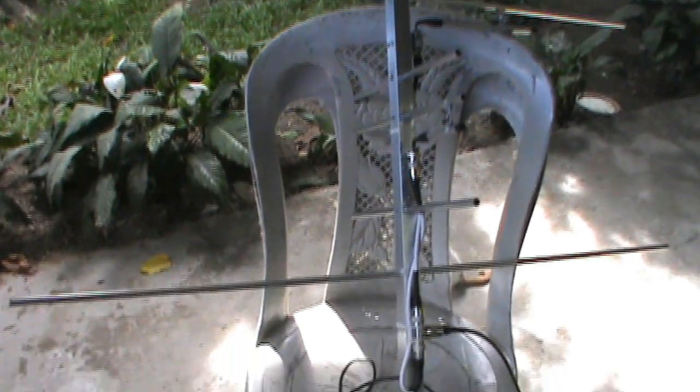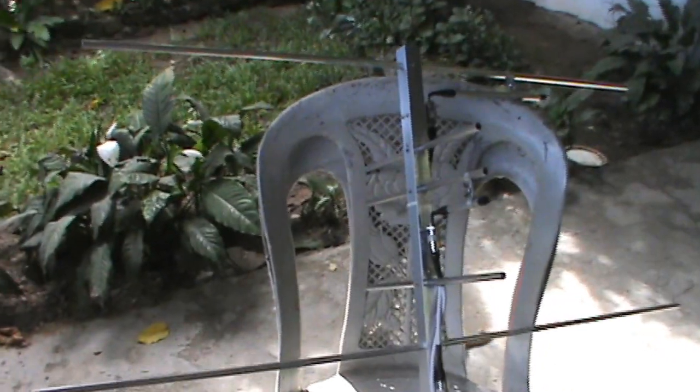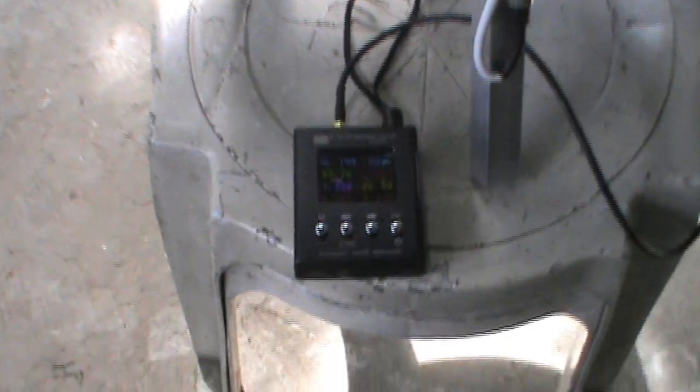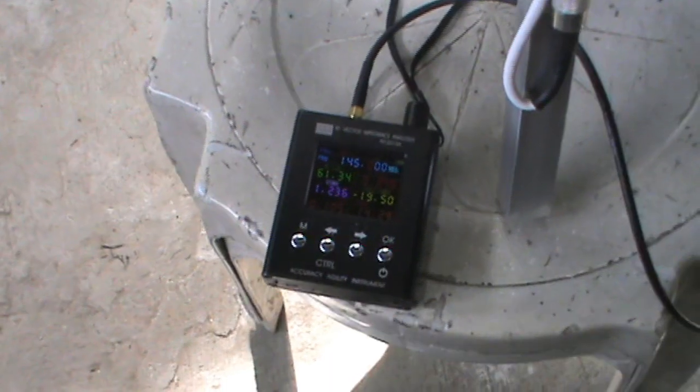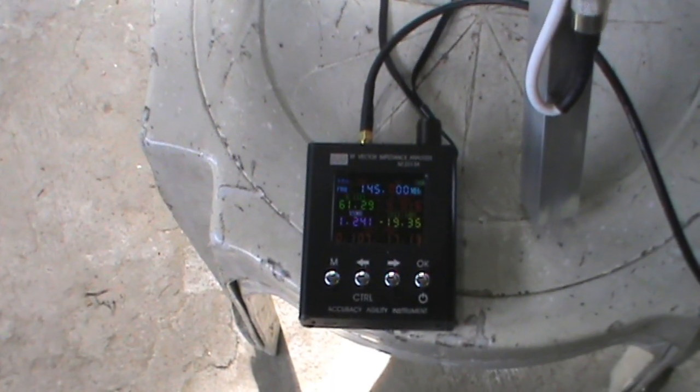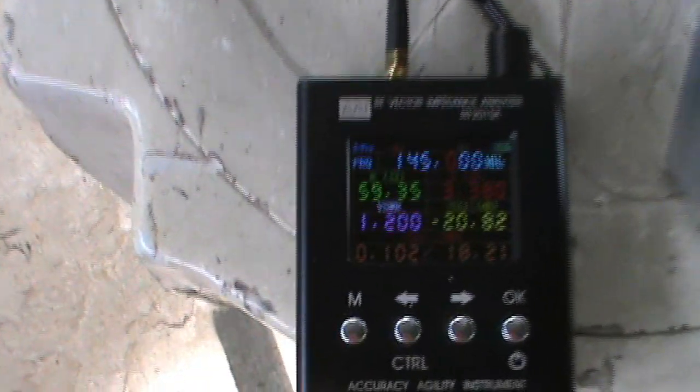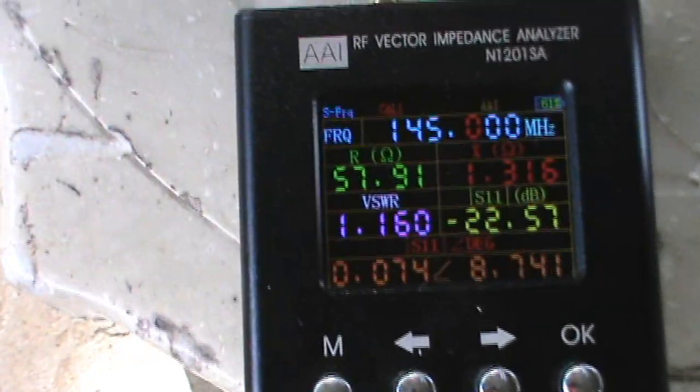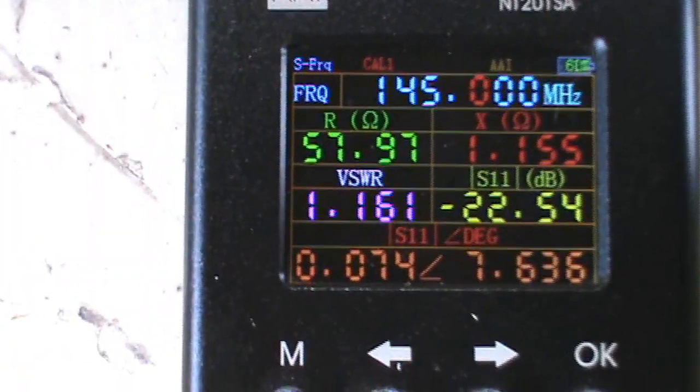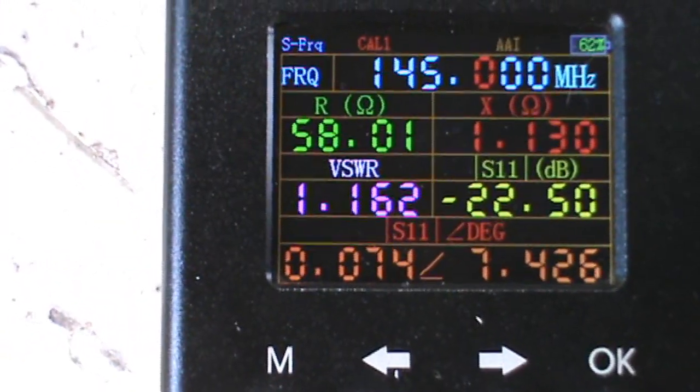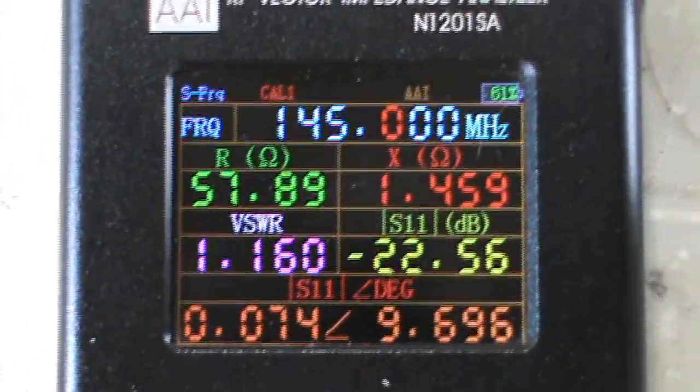Let's quickly check the frequency response of these 2 by 3 element Yagi. This is now connected to my Vector NanoVNA Analyzer. As we can see on 145 MHz, we have 1.1 SWR.